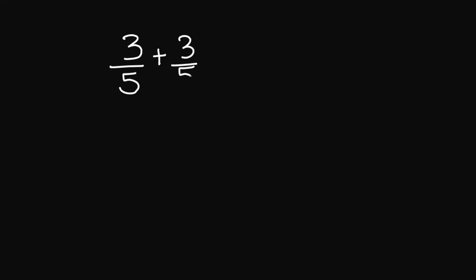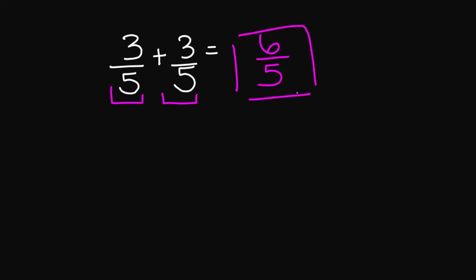Let's try 3 over 5 plus 3 over 5. My denominators are the same, so I'm going to add my numerators. 3 plus 3 is 6 over 5. Your final answer is 6 over 5.